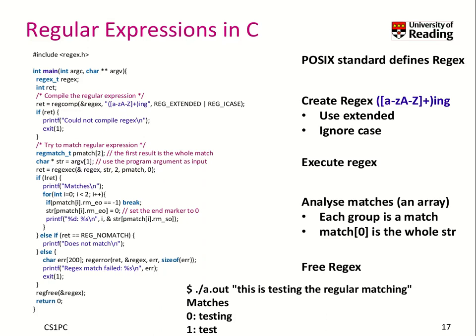There is a POSIX standard that defines the regexes. What you need to do is create a regex. Here we want to create a regex for A to Z, A to Z plus A and G — a word ending with ING.